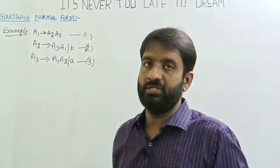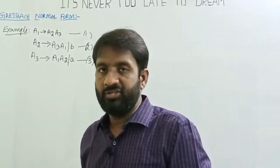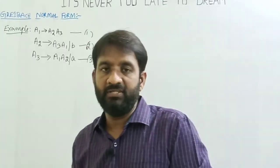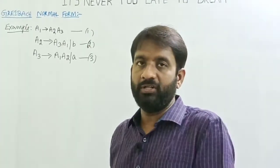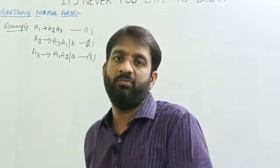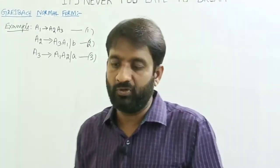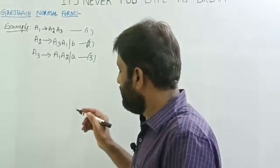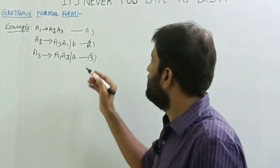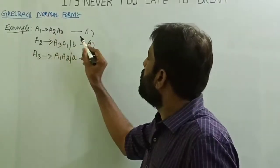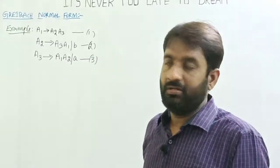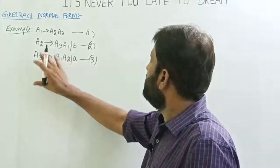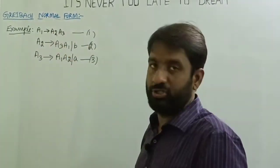As you know, the first step is to simplify the grammar, then convert into Chomsky Normal Form. There are no epsilon productions and no unit productions in this grammar.